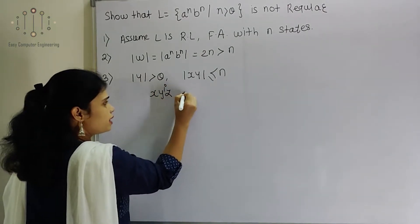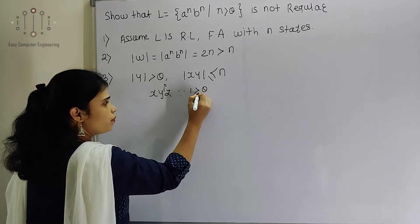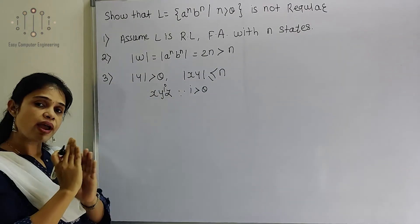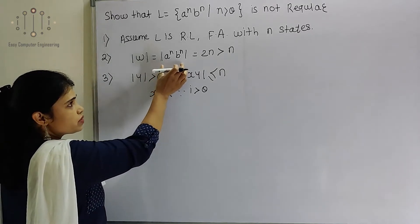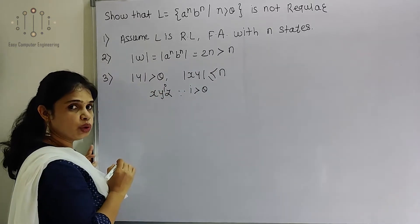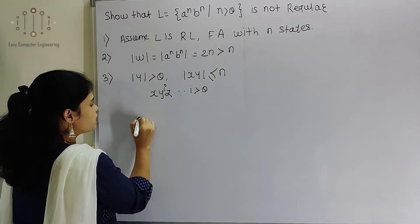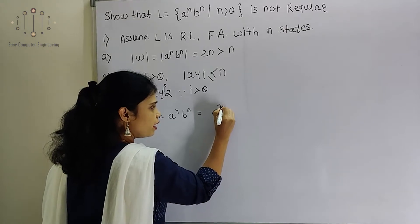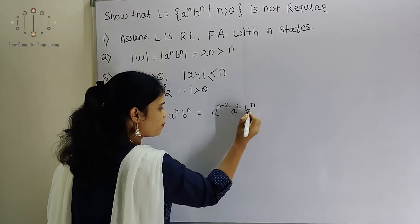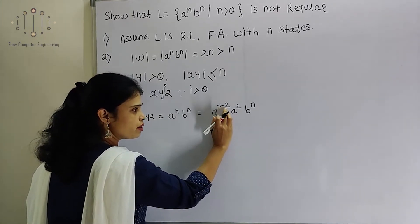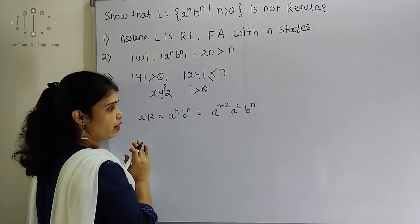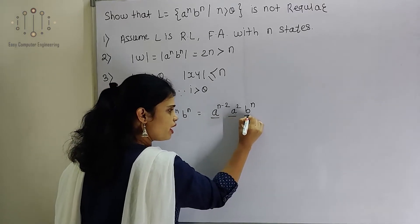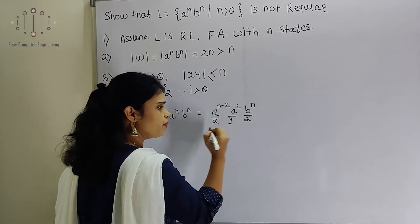So A^N B^N is our X Y Z language with length 2N. We represent A^N B^N as A^(N-2) · A^2 · B^N, which is the same string written differently. In the form X Y Z: X is A^(N-2), Y is A^2, and Z is B^N.